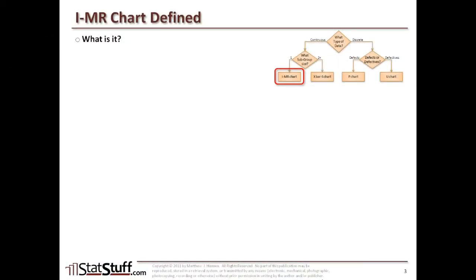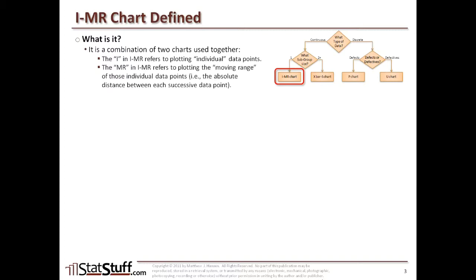All right, now let's more specifically dive into defining the IMR chart. Well, the IMR chart is actually a combination of two different charts that are used together. First, the I refers to the individual data points that are being plotted and the MR refers to the moving range of those individual data points. That is the absolute distance between each successive data point.